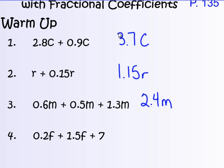Number four: 0.2f and 1.5f plus 7—that's not a like term, so that stays out separately—and you got 1.7f plus 7. Put a star next to any of these if you did not get the same answers that I have here, and make sure that you go over this with me in class tomorrow or ask me a question.